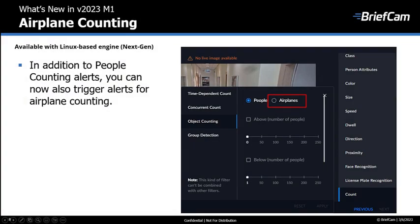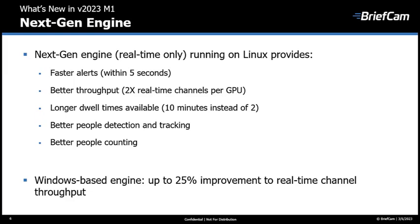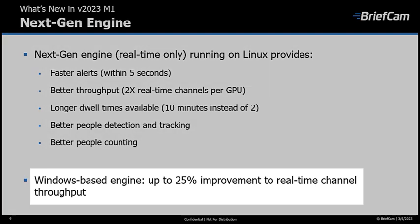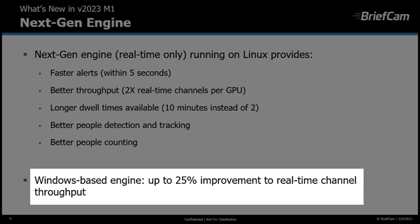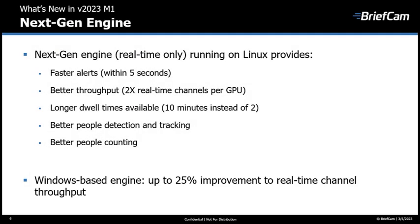With the next-gen engine, in addition to people counting, you can now also send alerts for airplane counting. For customers who opt to keep using the classic engine, this version also offers an improvement in real-time performance. The real-time channels that can be used on GPUs using the classic engine has increased by up to 25% depending on the GPU type.